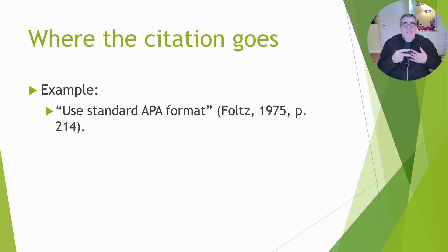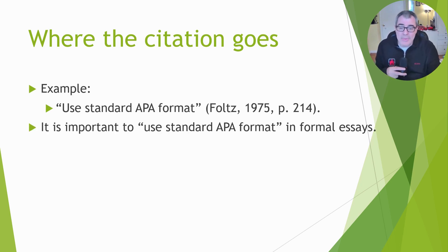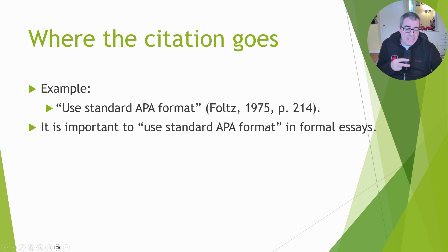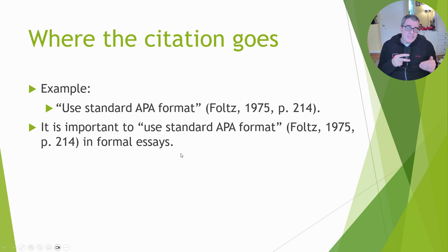For example, let's pretend we're going to quote the phrase 'use standard APA format,' taken from a book written by James Foltz, published in 1975, taken from page 214. We integrate this into our own sentence: 'It is important to use standard APA format in formal essays.' Because this is a direct quote, we need a citation, and the citation goes right after the quoted portion. Note that in MLA format you would put the citation at the end of the sentence, but in APA format you always put the citation right after the piece of evidence.